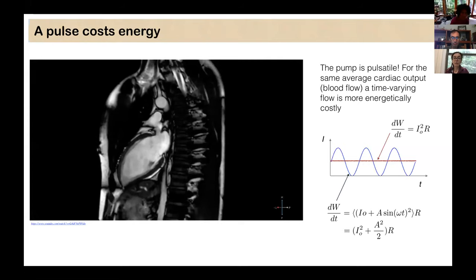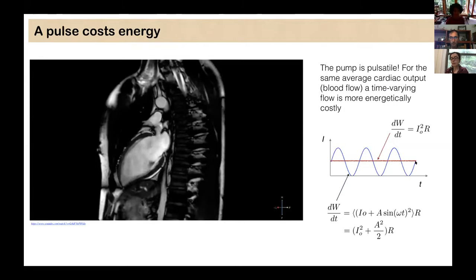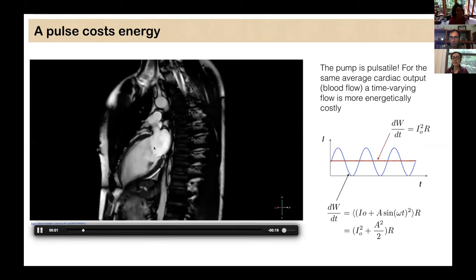So now here on this slide on the left, you see a beating heart. This is just to convince you that, yes, the pump is pulsatile. However, for the same average cardiac output, which is basically blood flow, a time-varying flow, which is the oscillatory blue line, is more energetically costly than the red line, which is a steady flow with the same mean as the oscillatory one. You can see that for the steady flow, you know for a single vessel, the dissipation is I squared times R, whereas for the oscillatory flow, you get an extra term here in the dissipation, which depends on the amplitude of the pulse. So if you could somehow convert this pump here to a steady pump, you would gain a lot from dissipation.